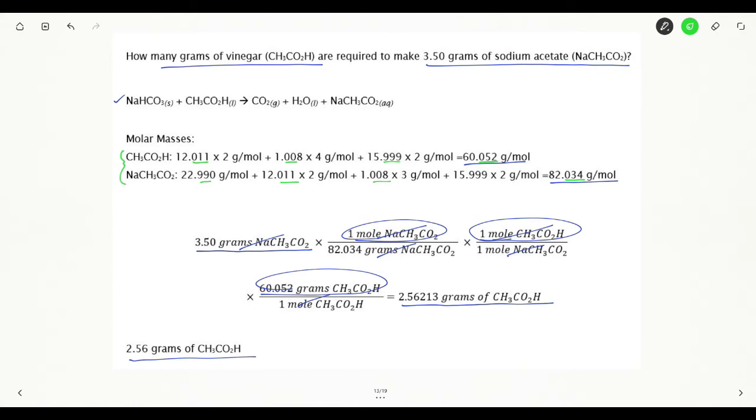Switching to the stoichiometric calculation and also switching to multiplication division, let's count up how many sig figs each of my numbers has. So my 3.5 grams of sodium acetate has three sig figs. My molar mass here has five.